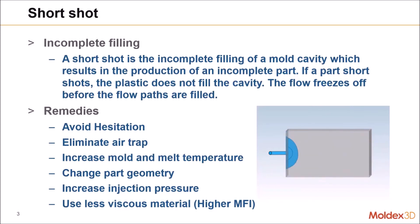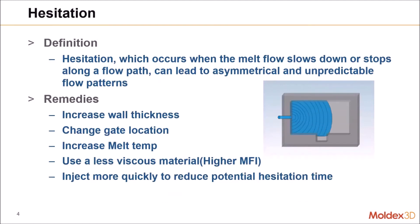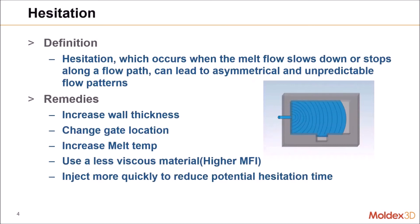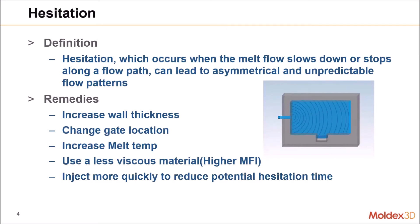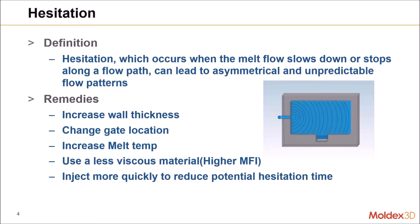Next is hesitation. Hesitation is related to short shot, which occurs when the melt flow slows down and stops along the flow path. To solve this issue, the user can increase the wall thickness of the part, change the gate location, increase the melt temperature, or use a less viscous material with a higher MFI value. If not, the user can inject more quickly to reduce potential hesitation time.